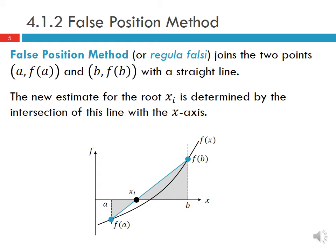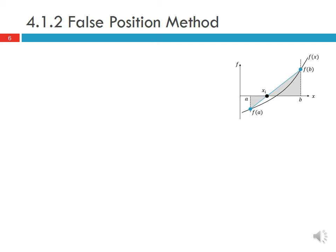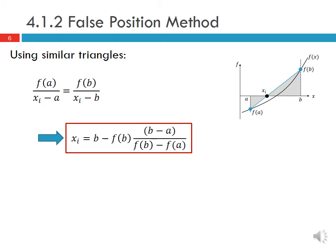Using similar triangles we can see that f(a) divided by (xi - a) is equal to f(b) divided by (xi - b). So that means we can write our xi as b minus f(b) times (b - a) over (f(b) - f(a)).